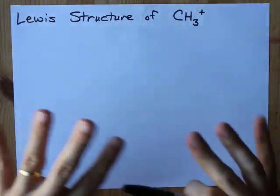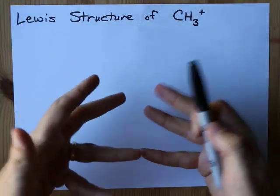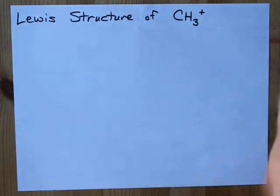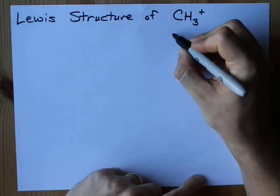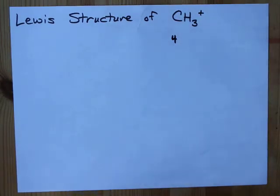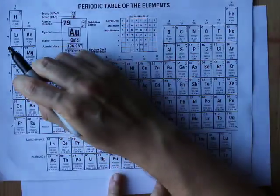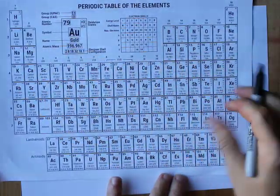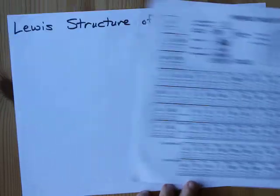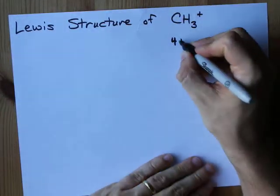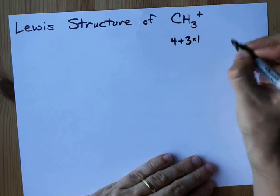But we're going to draw its Lewis structure here just to show you because you're here looking for it, right? Carbon brings four electrons in its valence shell. I know that because it's the first, second, third, fourth element in its row.